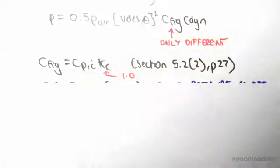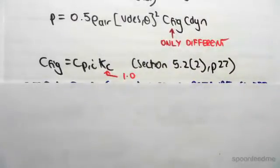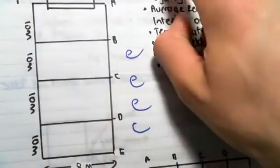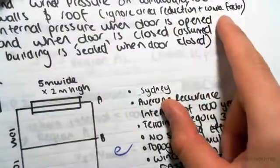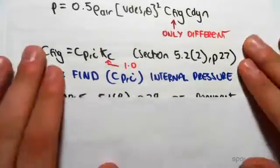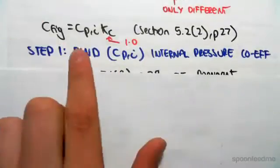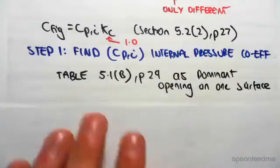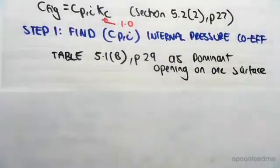We're ignoring area reduction and the combination factor, which essentially means it equals one. So all we need to find is C_pi. We go to Table 5.1 on page 29.